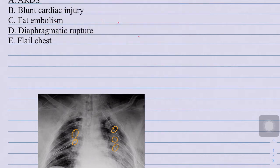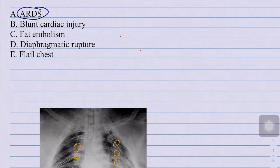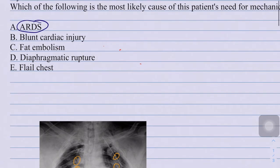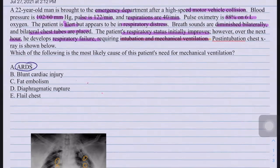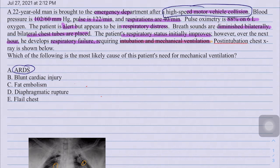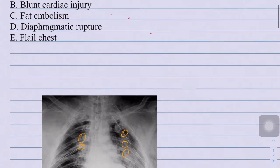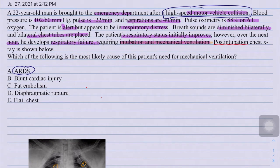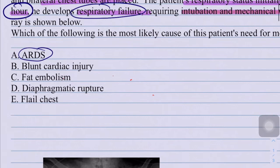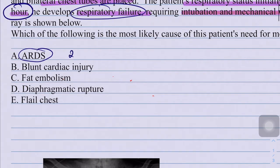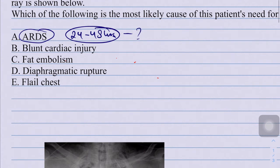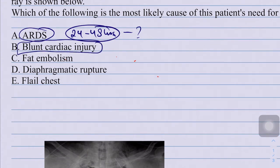Option A is ARDS - this could be the answer given the history of high-speed motor vehicle accident, but the issue is the duration. The next hour he develops respiratory failure, and ARDS usually develops within 24 to 48 hours. This is too early for ARDS to develop. Let's consider blunt cardiac injury next.